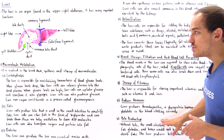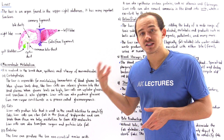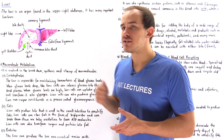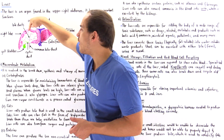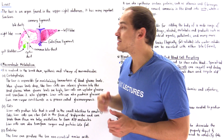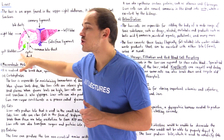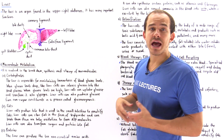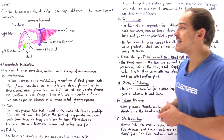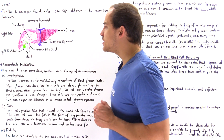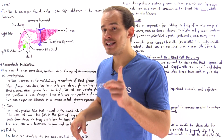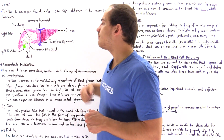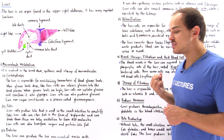The liver produces a substance known as bile. Bile is released into the ducts and eventually stored in the gallbladder until digestion begins in the small intestine. At that point, bile is released from the gallbladder and travels into the small intestine.